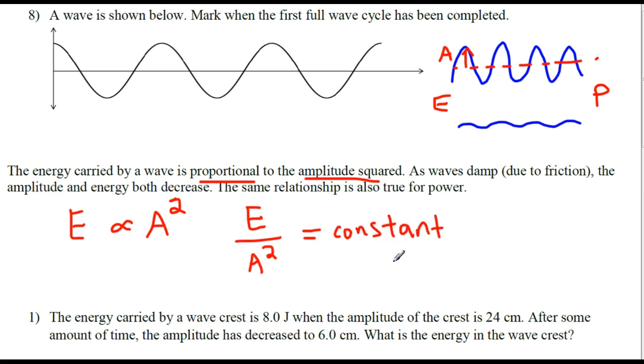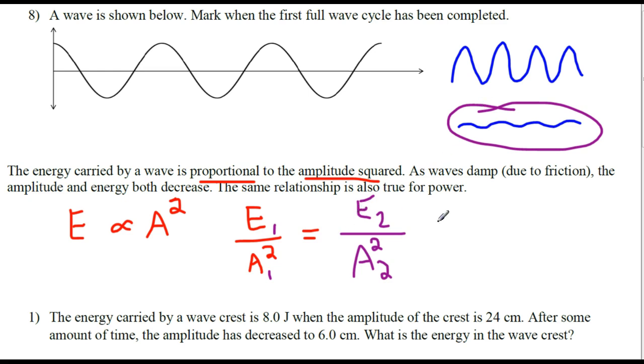Which essentially states if you take some first energy and some first amplitude, the ratio of E to A squared is the same. You could then take a second energy and a second amplitude. So let's say for these two waves, they have different amplitudes, they have different energies, but the ratio of E to A squared is always the same constant value. It doesn't matter if you change the amplitude for this wave. The energy adjusts so that the ratio E to A squared is always the same.